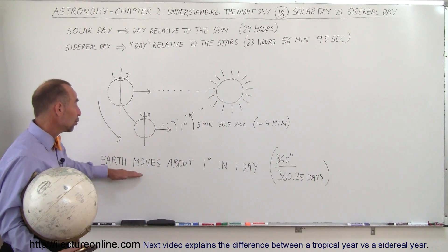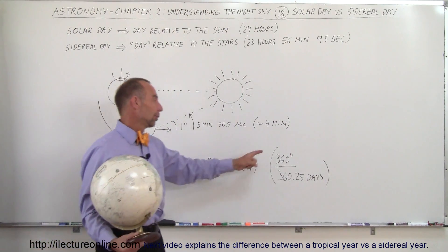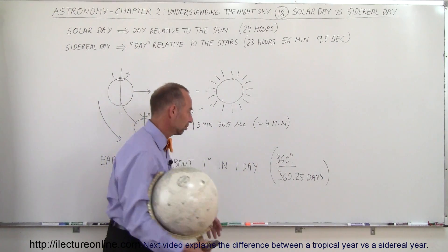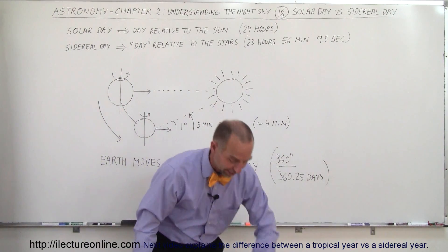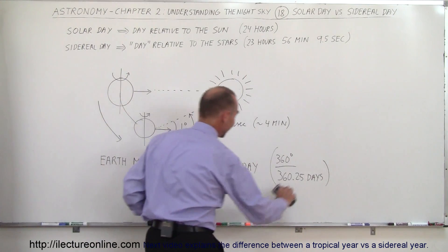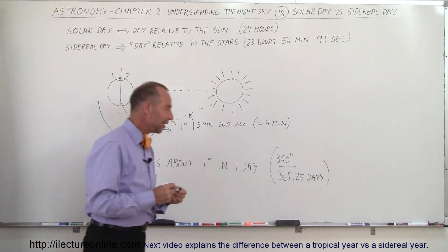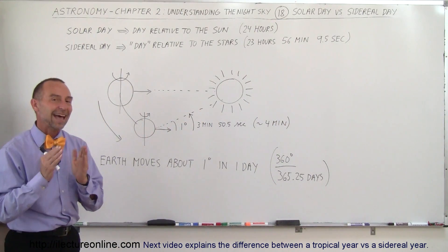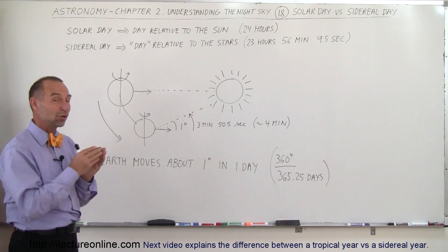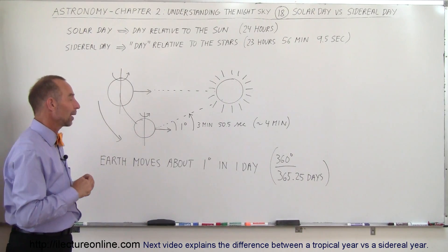So again, remember that the Earth moves about one degree in a day, or if you want to be more precise, 360 degrees divided by... oops, I've got that one wrong. There's 365.25 days, so let me correct that. So it'd be 365.25 days in a year, and that's the exact amount of motion in degrees as the Earth goes around the Sun.